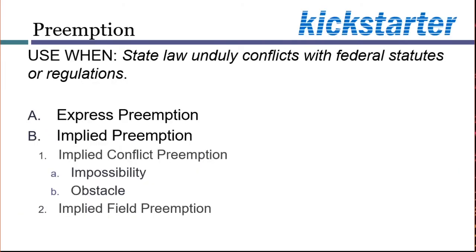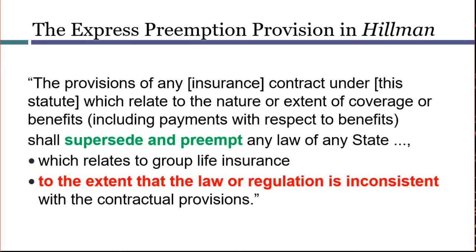At this point, you can pause the video and consider whether the state law will be preempted under any of these concepts. It's quite possible that a state law might be preempted under more than one category. Express preemption only occurs if Congress explicitly includes some preempting language in a statute. Here's the statute from the Hillman case. The statute indicates a few things. First, Congress recognized that there might be conflicting state laws and wanted to clarify a desire to preempt some of them.